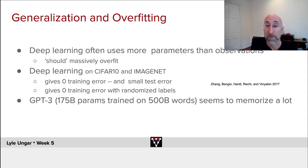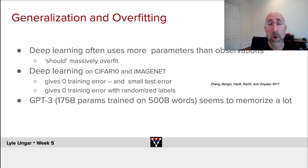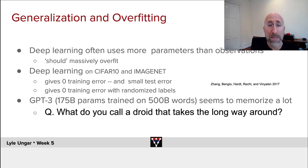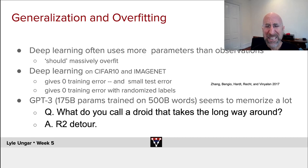Another example is GPT-3, one of the key natural language processing models we'll cover later in the semester. It has 175 billion parameters trained on half a trillion words — roughly the same number of parameters as words. It works remarkably well and doesn't overfit horribly, but it does seem to memorize. We know this because the network is trained to predict what words come next, so we can test it. For example, input: 'What do you call a droid that takes the long way around?' GPT-3 outputs: 'R2 detour.' It probably didn't make that up — it memorized it. So these networks are memorizing data but still not overfitting nearly as much as you might think.